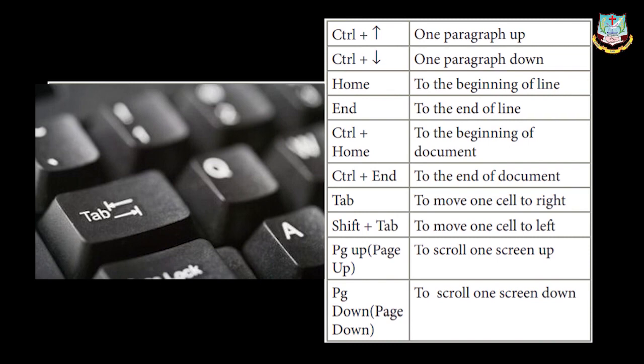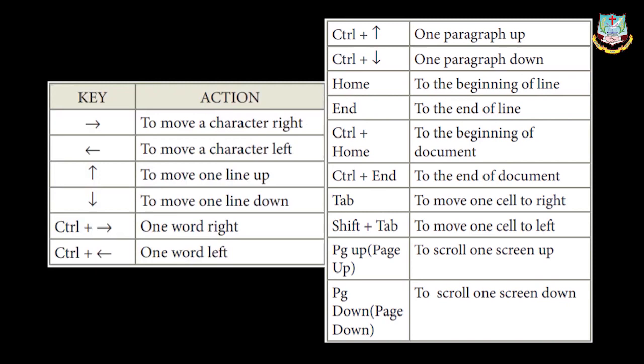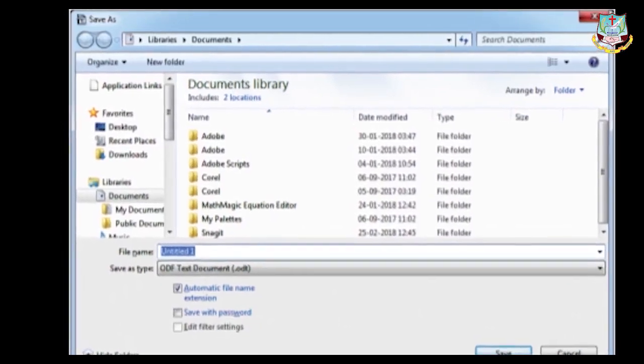To go to the beginning of the document press Ctrl+Home; to go to the end of the document press Ctrl+End. The Tab key moves one cell to the right — useful in tables. Shift+Tab moves the cursor to the left cell in a table. Page Up scrolls one screen up; Page Down scrolls one screen down.